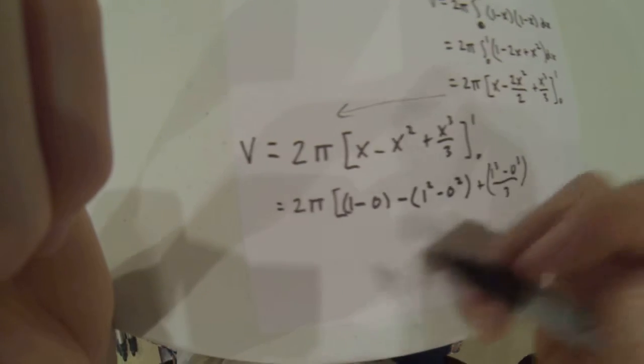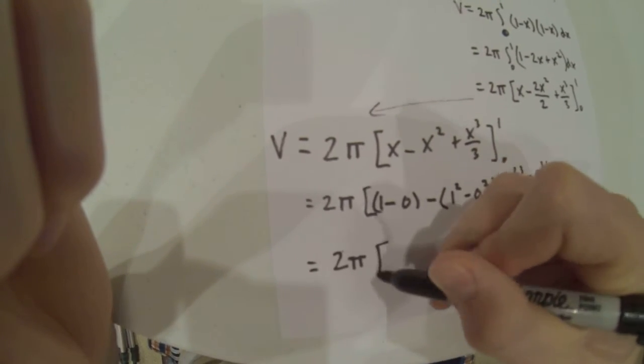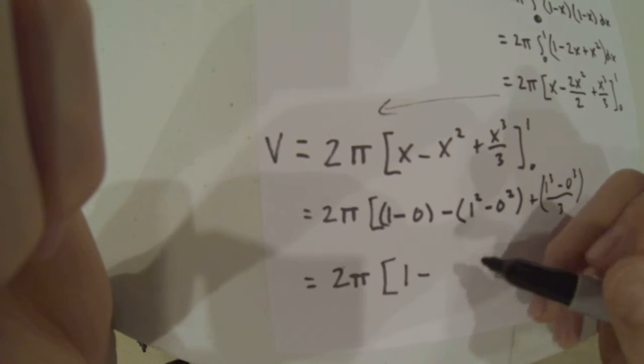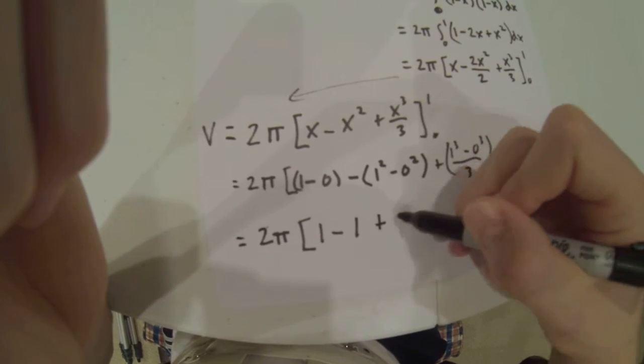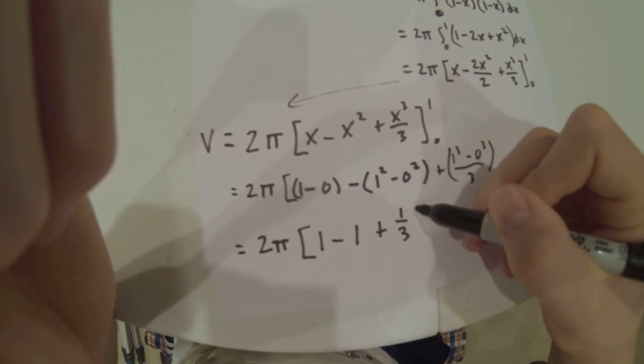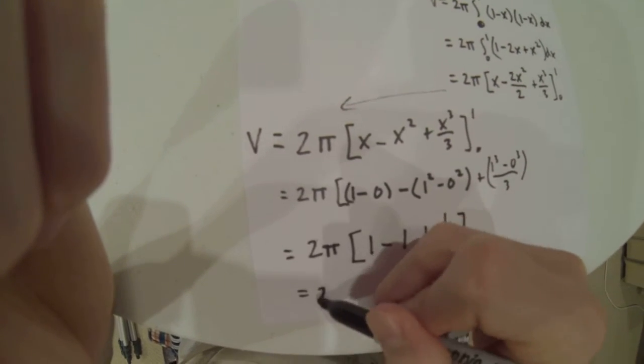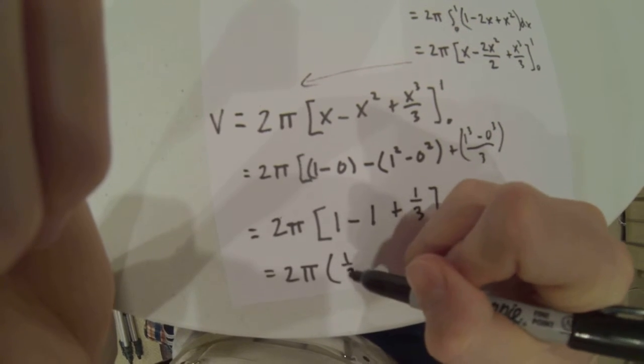From there, we simplify: 2π times (1 minus 1 plus 1/3), which equals 2π times 1/3.